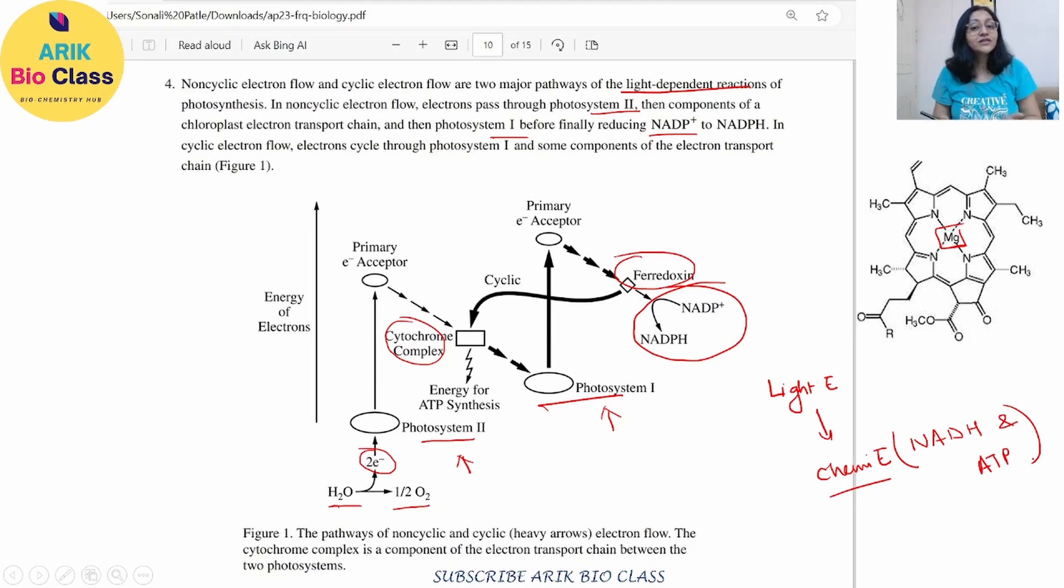Now these will travel to the dark reaction. They are formed in the light reaction, they travel to the dark reaction and they will help over there in order to fix the carbon dioxide and convert it into the sugar. So that is how the whole photosynthesis system is all about.